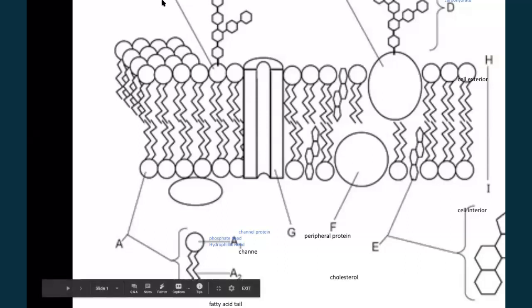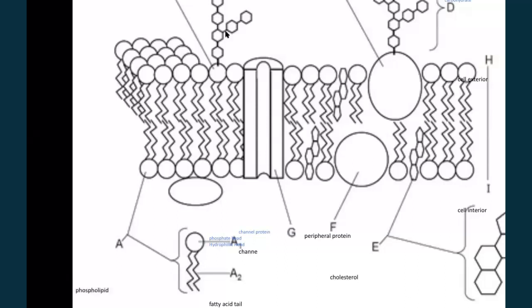Up at the top, B is a glycolipid. I know that because it has the fatty acid tail and then a sugar attached.